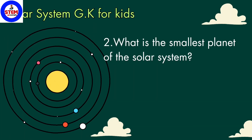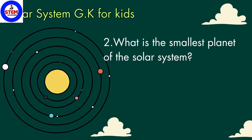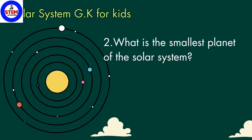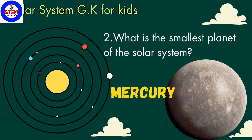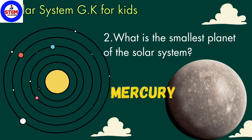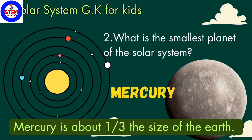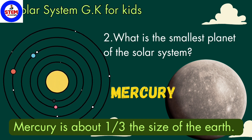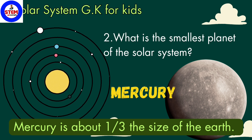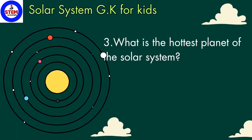Second question: what is the smallest planet of the solar system? That's right — Mercury is the smallest planet of the solar system. In order, Mercury is the first planet from the sun. Do you know, students, Mercury is about one third the size of the Earth.